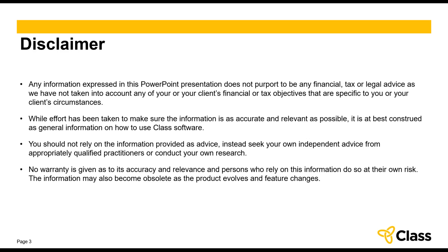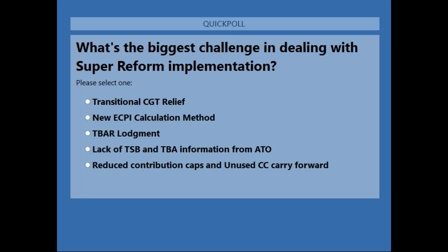While we're waiting for more attendees to arrive, here's the first poll question on super reform. What are the biggest challenges in dealing with super reform implementation? Is it the transitional CGT relief, the new exempt current pension income calculation method, complying with transfer balance account reporting obligations, or the lack of total super balance and transfer balance account information from the ATO? The last option is whether it's the reduced contribution caps — both concessional and non-concessional — as well as tracking unused concessional contribution carry-forward for members with total super balance less than half a million dollars.